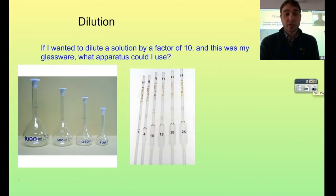To do dilutions we use volumetric flasks and pipettes. You need to match your pipette with your volumetric flask to get the right level of dilution. Down here I've got volumetric flasks of 1 litre, 500ml, 250ml and 100ml. And I've got a variety of pipettes: 1, 4, 10, 15, 20 and 25ml.